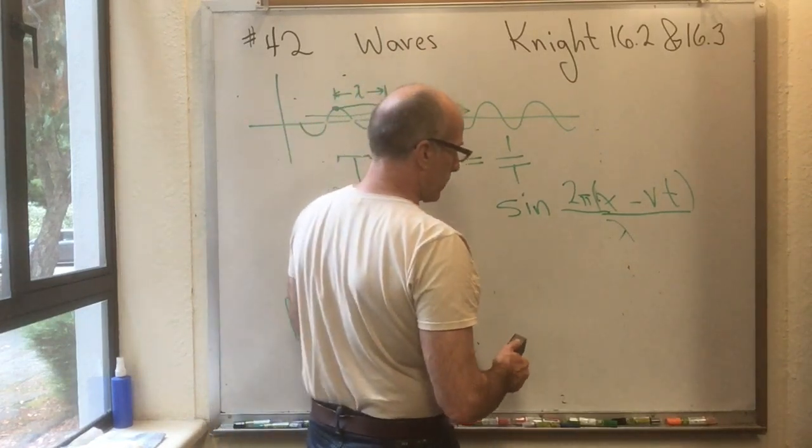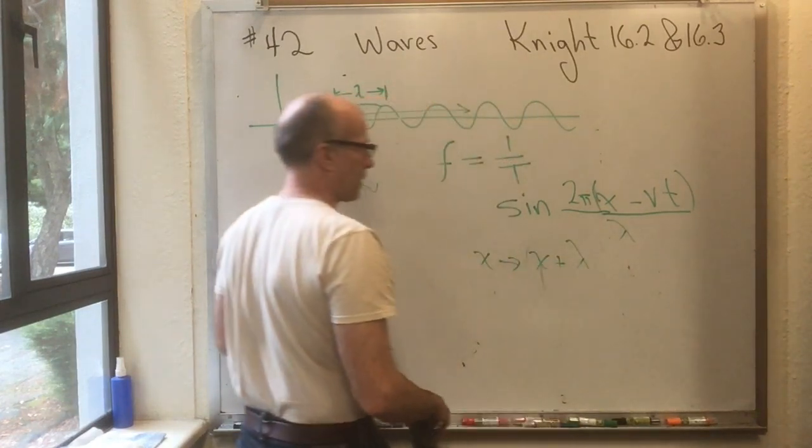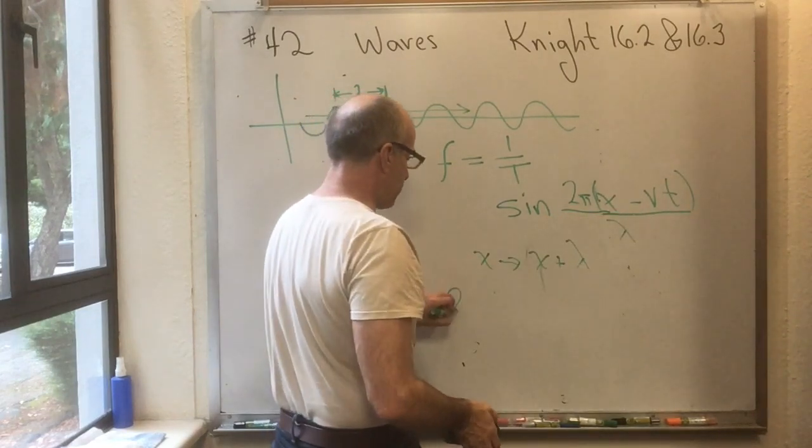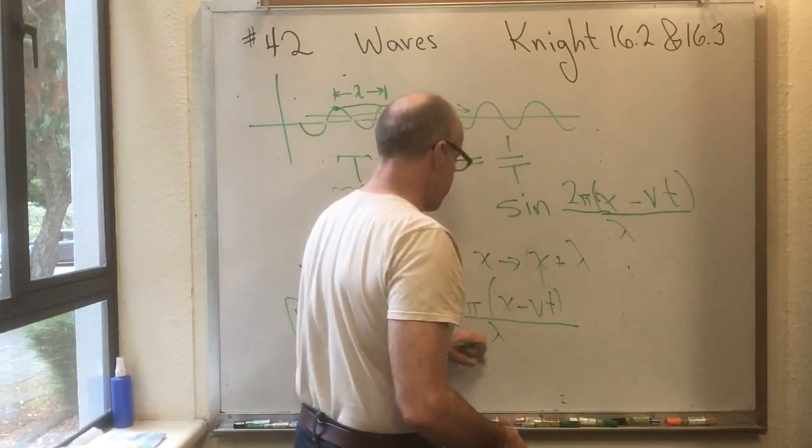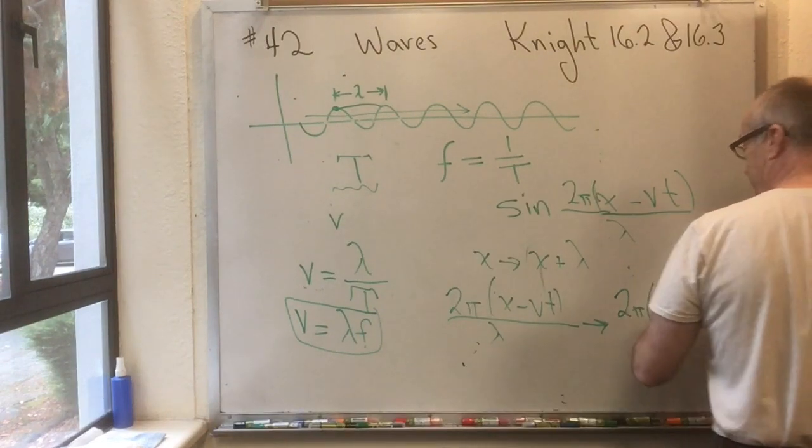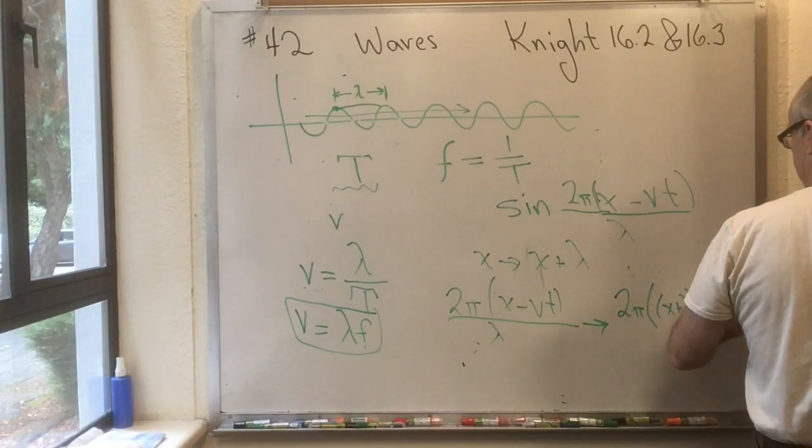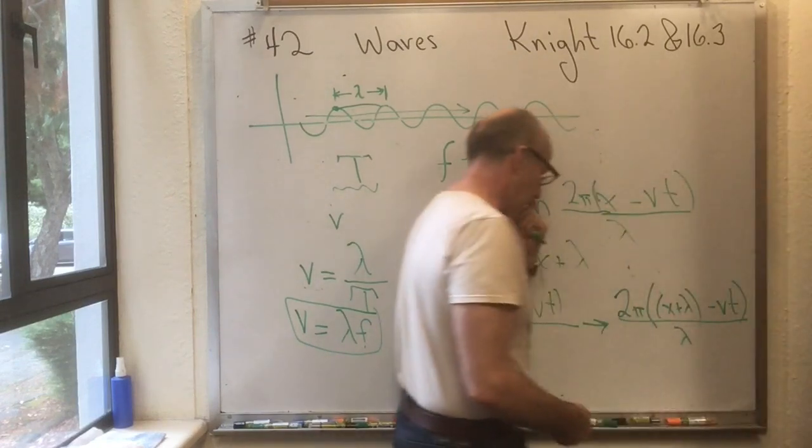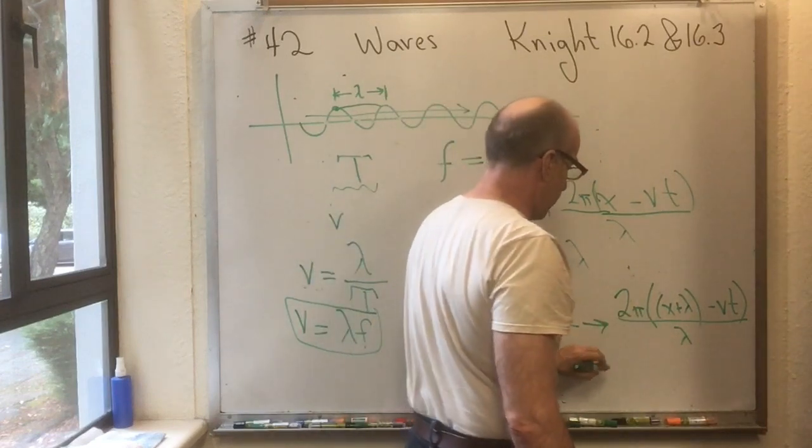Now, why does that work? Well, because if X goes to X plus lambda, then what I have here in the argument, sine of 2 pi X minus VT over lambda, that goes to 2 pi times, and now everywhere I see X, I put X plus lambda, minus VT over lambda.